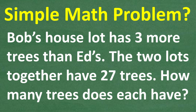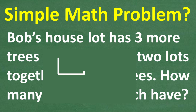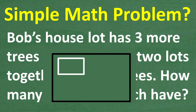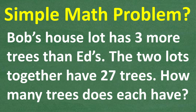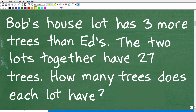So Bob's house's lot — if you don't know what a lot is, that's basically the property that the house sits on. So maybe here's Bob's house right there, and on his lot is a bunch of trees. Bob's house's lot has three more trees than Ed's. The two lots together have 27 trees. How many trees does each lot have? So Bob's lot has some trees and Ed's lot has some trees — we have to find these individual amounts.